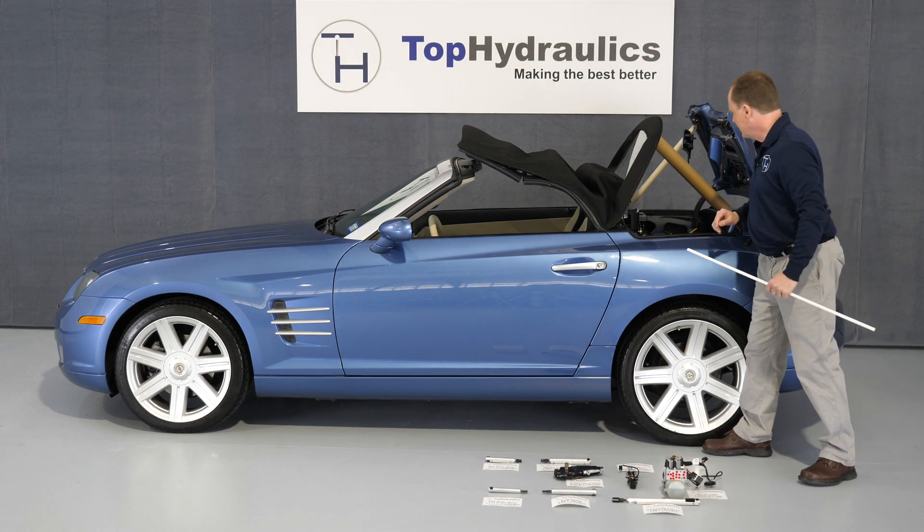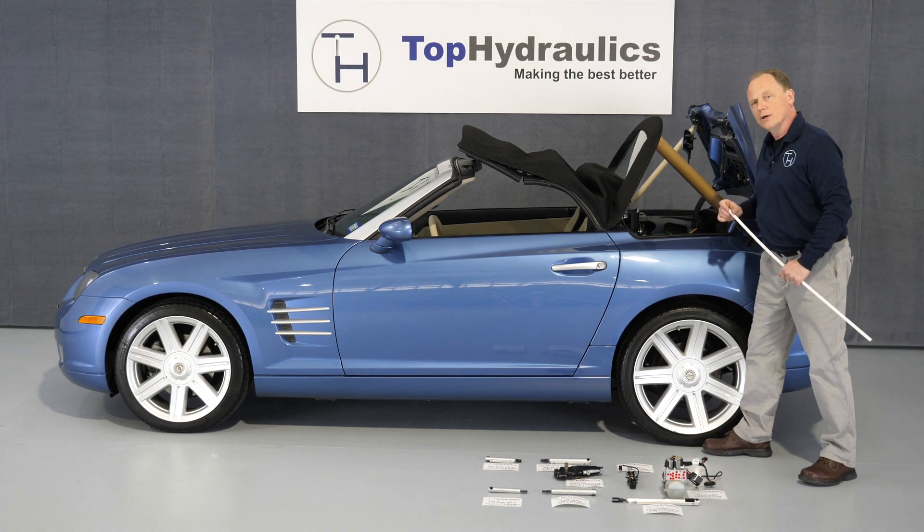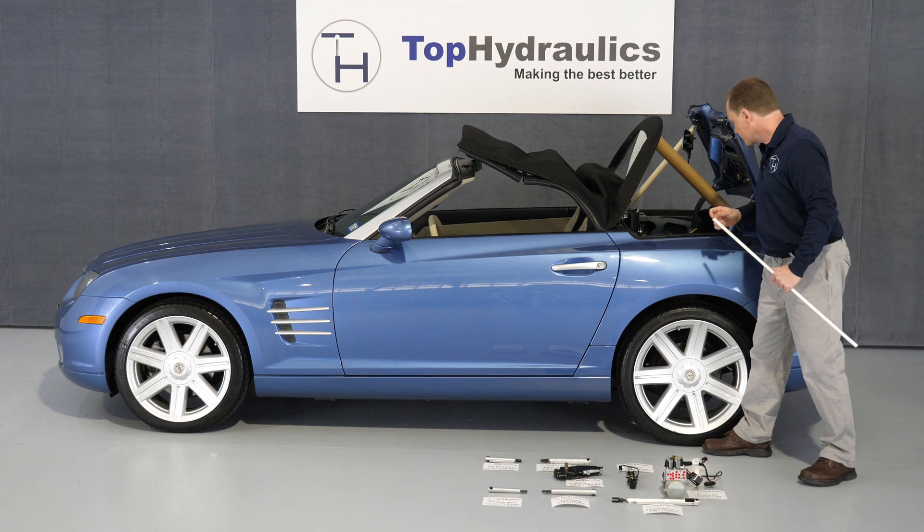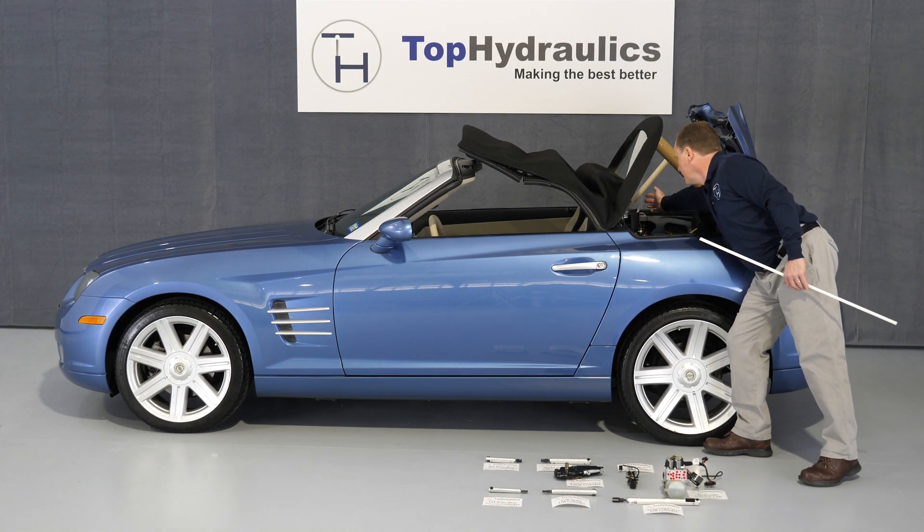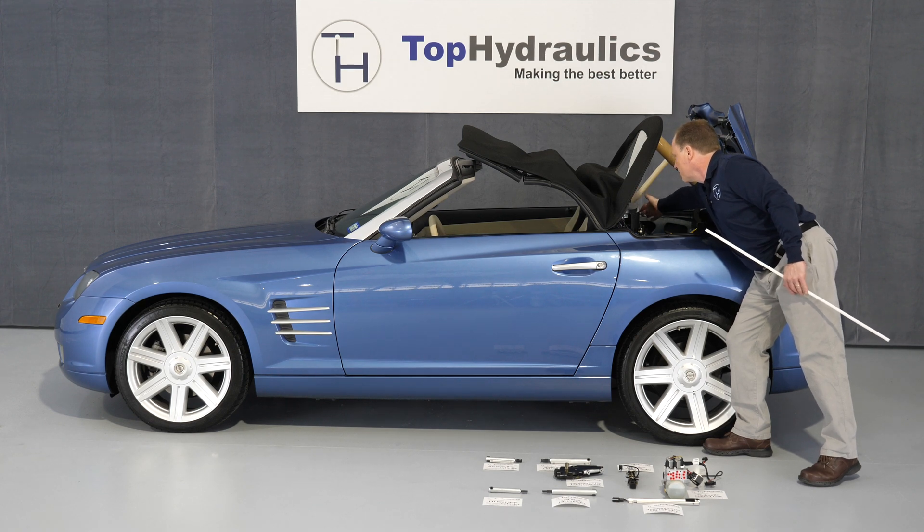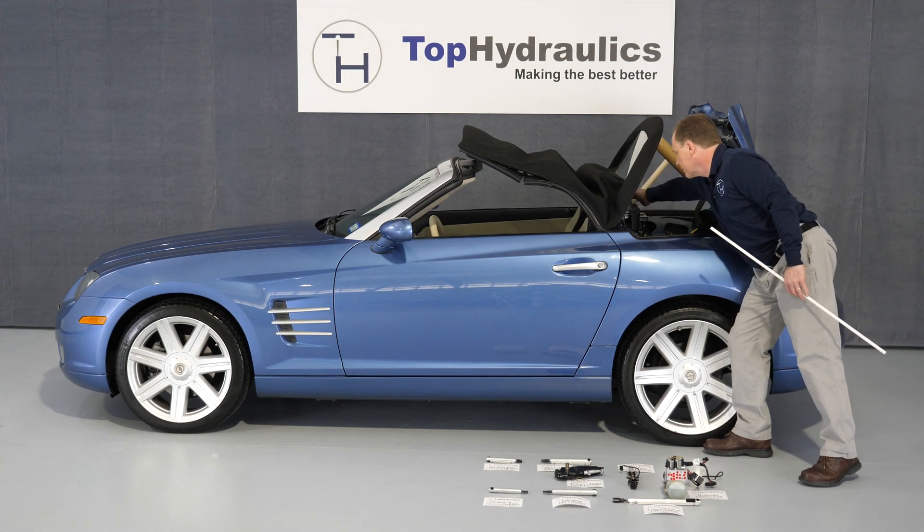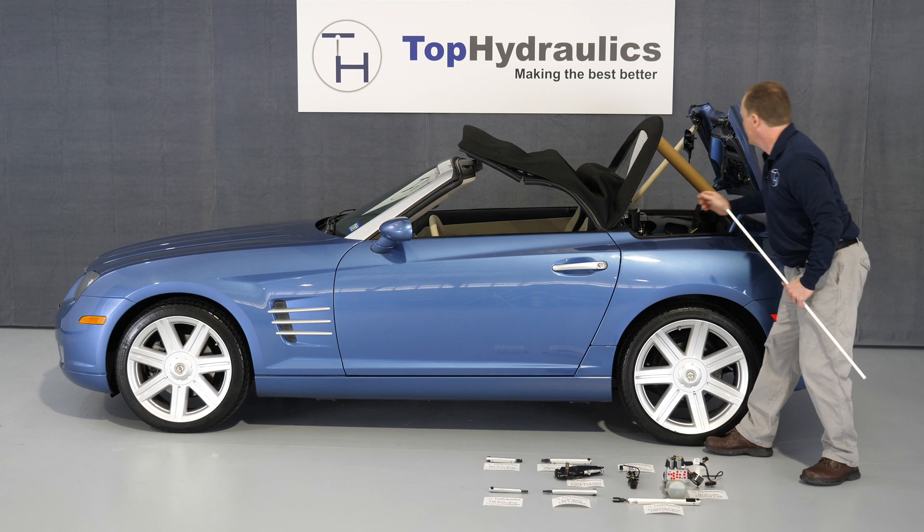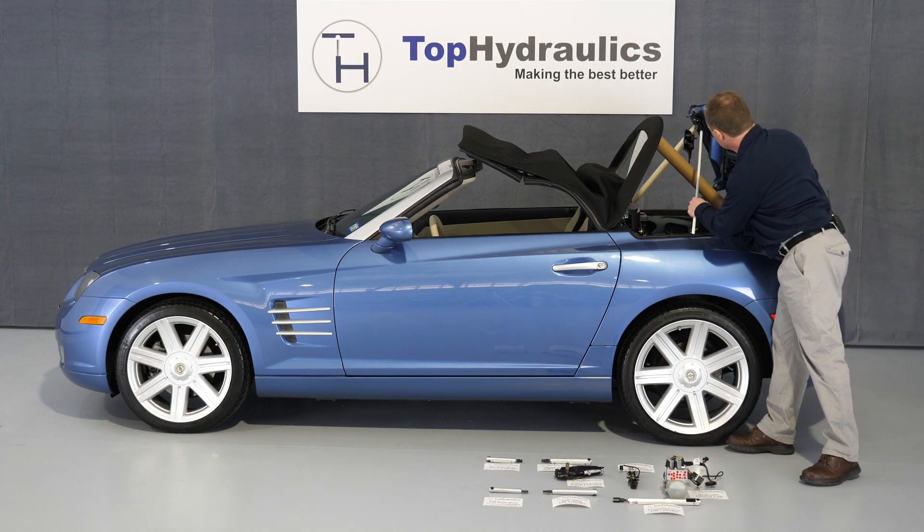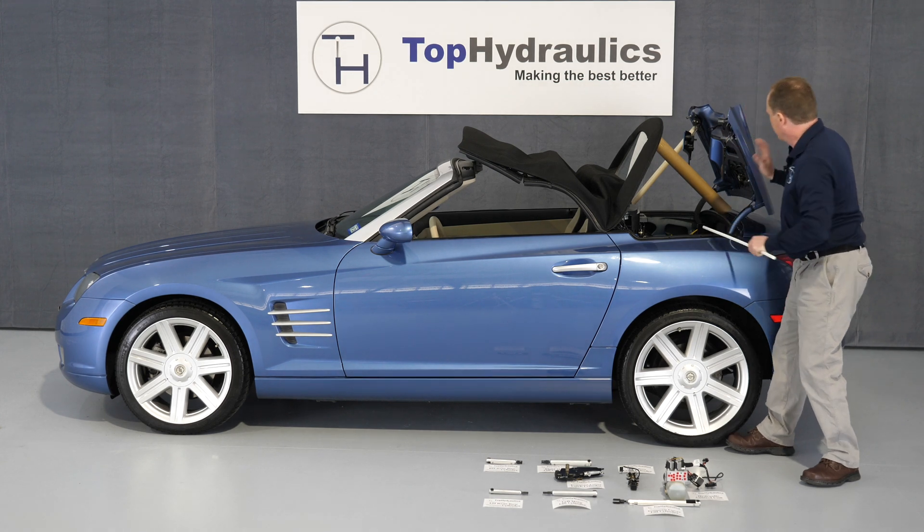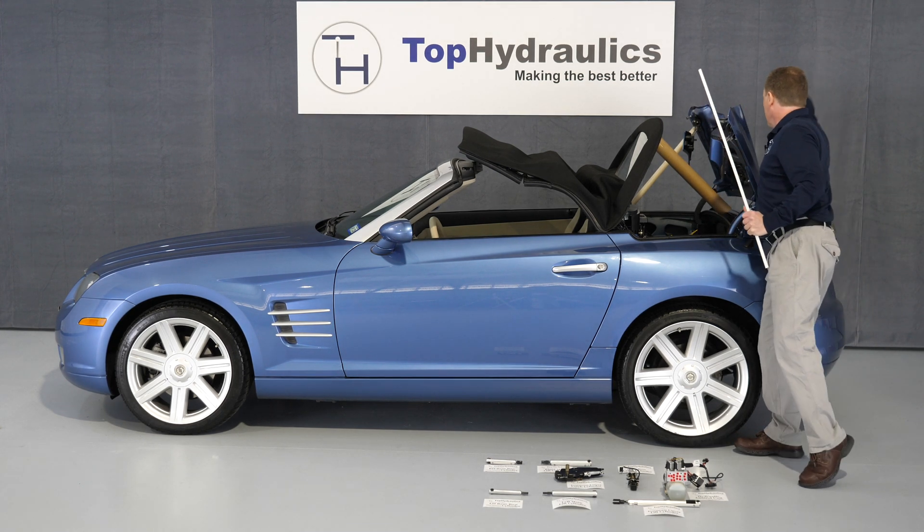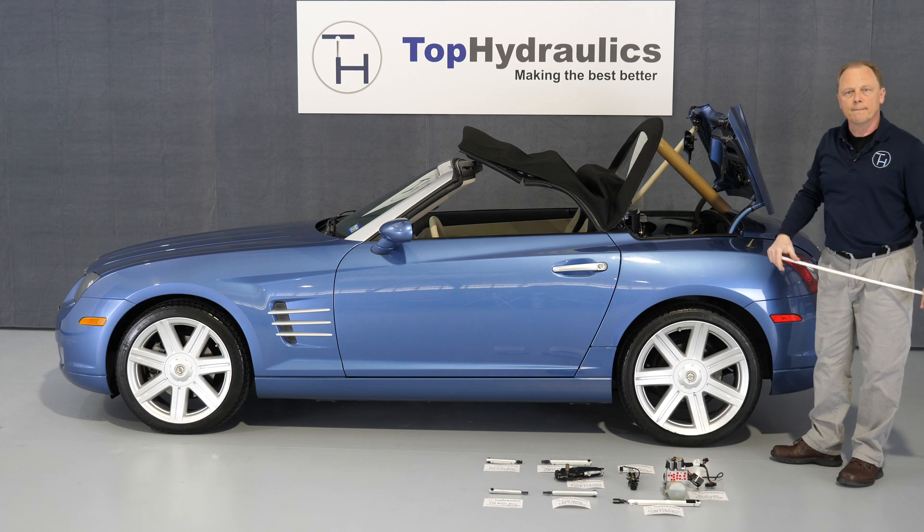Then we have the two latches you've seen in our video on manually opening and closing the top. We have the tonneau cover lock back here in the center behind the rollover or sports bars as Chrysler calls them. And lastly we have the rear bow lock that is located under the tonneau cover. When the tonneau cover is closed, the rear bow latches into it.